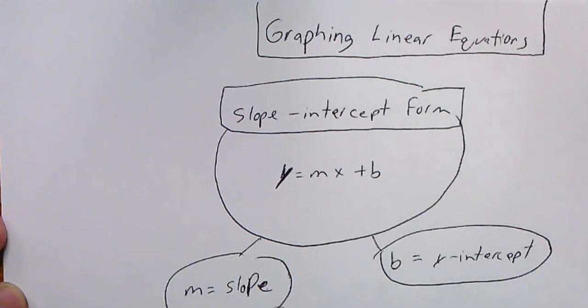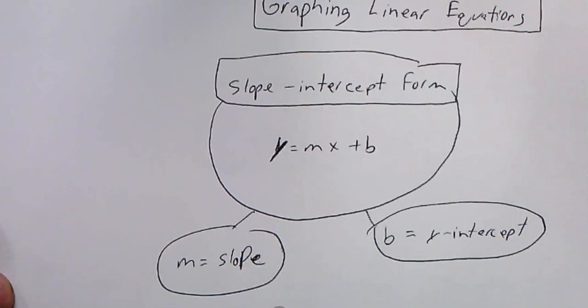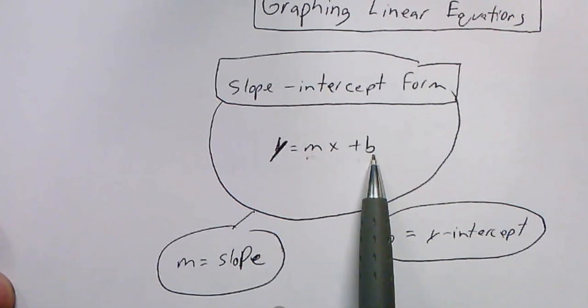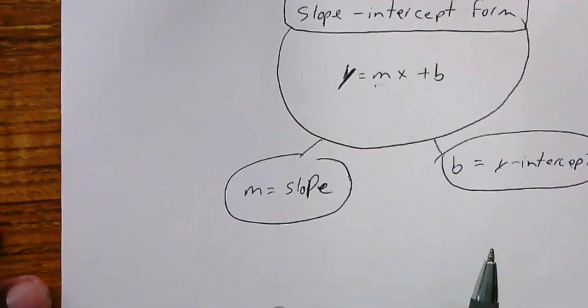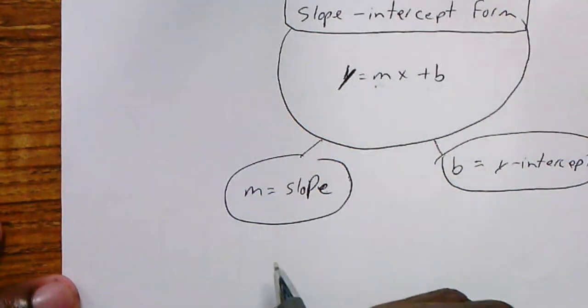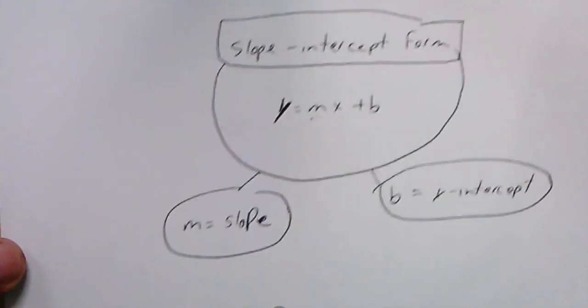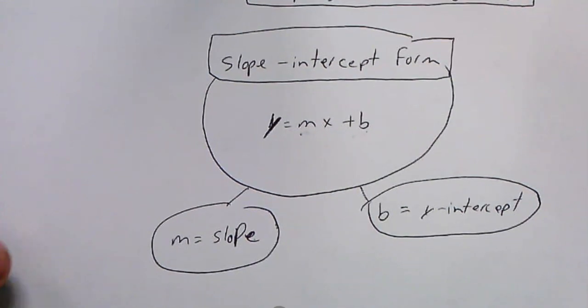In slope-intercept form, m means slope and the b variable means y-intercept. That's why we call this slope-intercept form. In this form we can easily see the slope, which is the number in front of x, and the b value or y-intercept, which is the constant on the end without an x. The standard form of the equation is a little bit different, but we're talking about slope-intercept form.